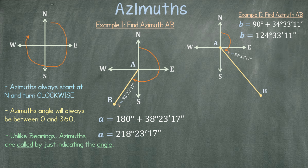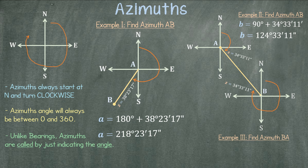Our last example is asking us to find azimuth BA. In a similar way that we noted for bearings, for azimuths it is very important to not confuse azimuth AB with azimuth BA. This is a very common mistake but easy to avoid.